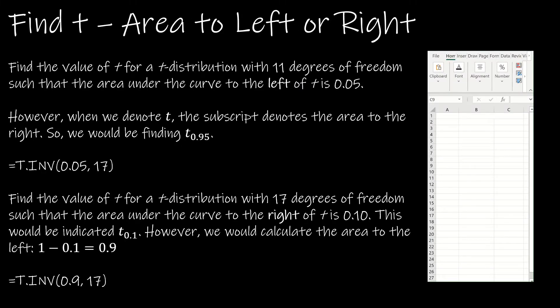We're going to jump right into finding the area or the probability to the left or right of a certain value using the t-distribution as opposed to the normal distribution. One thing you need to keep in mind as you're working through the material in 8.2 and 8.3 is when you see something like t sub 0.095, the subscript always denotes the area to the right.